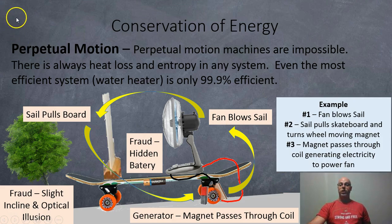Conservation of energy and perpetual motion. So perpetual motion machines are impossible. There is always heat loss and entropy in any system. Even the most efficient system, like a water heater, is only 99.9% efficient.